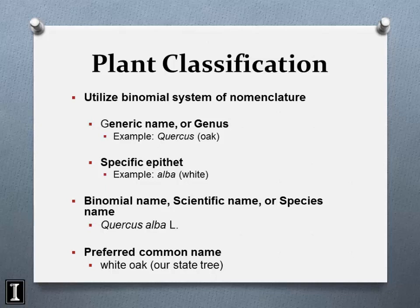Many species have multiple common names depending on your location. For example, Quercus ellipsoidalis is called hills oak in some areas but northern pin oak in Illinois. If you know the genus and species, everyone knows what you're talking about. The names are often described as Latin but many have Greek or English origins — we try to latinize them.